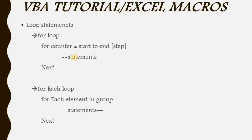In the For Each loop, the syntax is a little bit different. You write: For Each element In group — where element is like a counter, representing the type of variable in the group. The group can be a data type variable such as a string array or integer array. Followed by the list of statements you want to execute, and then the Next statement, which automatically goes back to the For Each loop. The step count here is always 1 by default — that is the key difference between For loop and For Each loop. For Each is mostly used in the case of arrays.